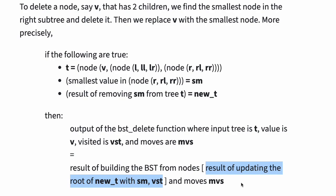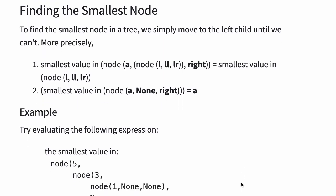To understand this property, let's first study the functions it is calling. To find the smallest node in a tree, we simply move to the left child until we can't. More precisely, the smallest value in node A with left child L, LL, LR, and right is equal to the smallest value in node L, LL, and LR. And the smallest value in node A, none, and right is A.